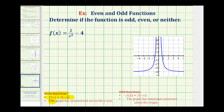The graph will also be symmetrical across the y-axis. And for odd functions, negative f of x is equal to f of negative x, and the graph has rotational symmetry about the origin — meaning if we rotate the graph about the origin one half turn, or 180 degrees, the graph will remain unchanged.